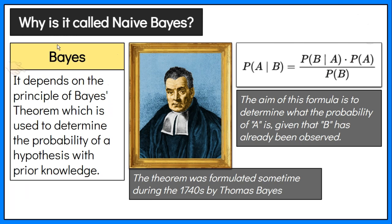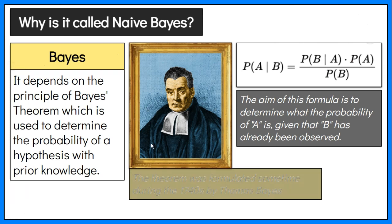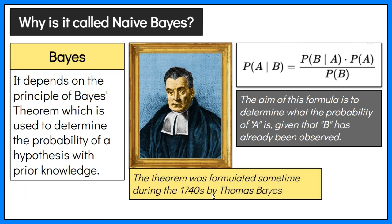It is called Bayes because it depends on the principle of Bayes' Theorem. This theorem is used to determine the probability of a hypothesis or outcome with prior knowledge. It was formulated sometime during the 1740s by Thomas Bayes, an English statistician, philosopher, and Presbyterian minister.